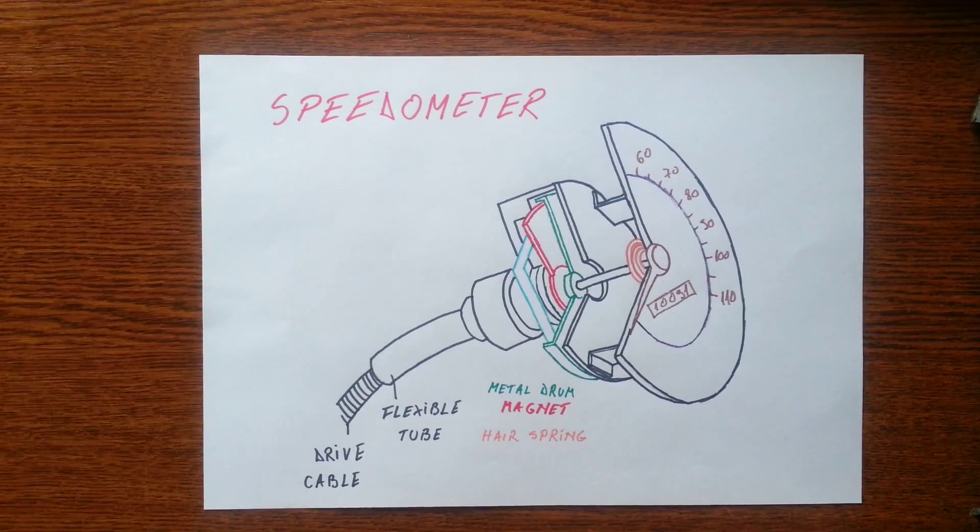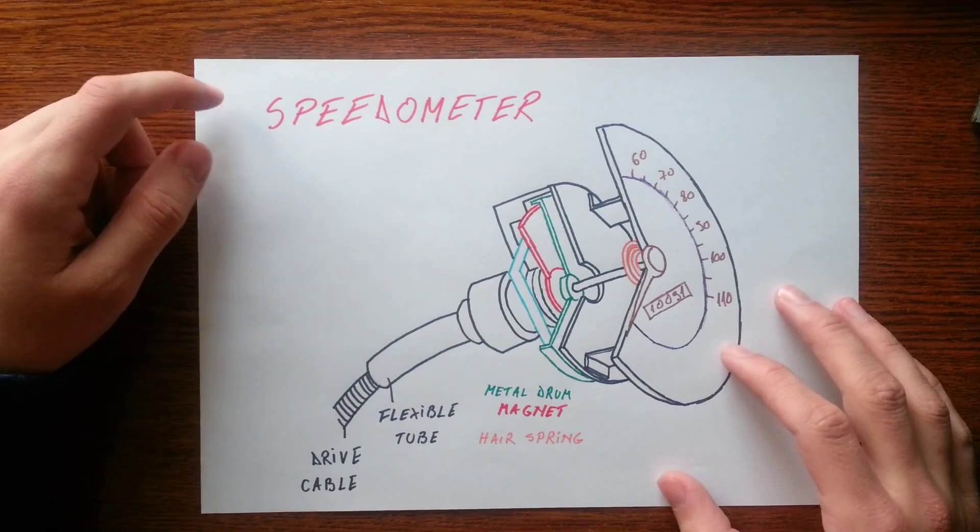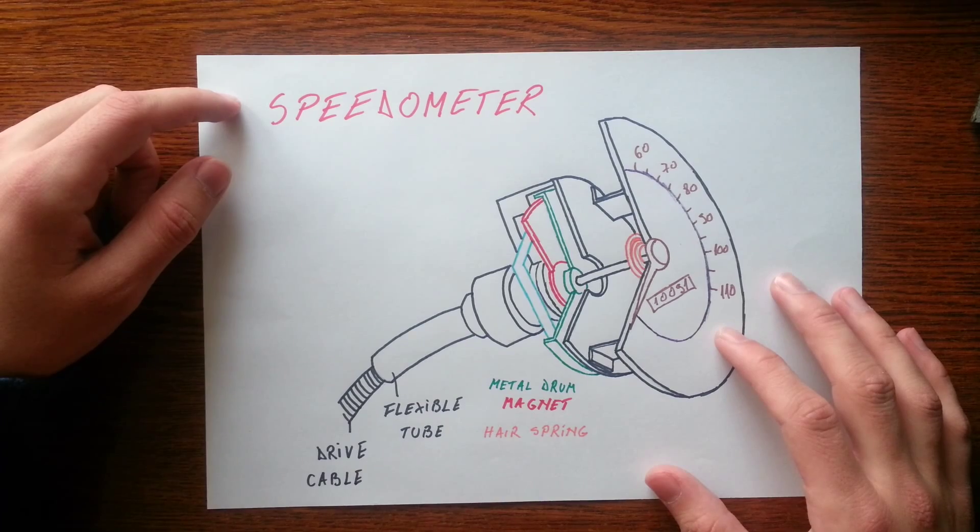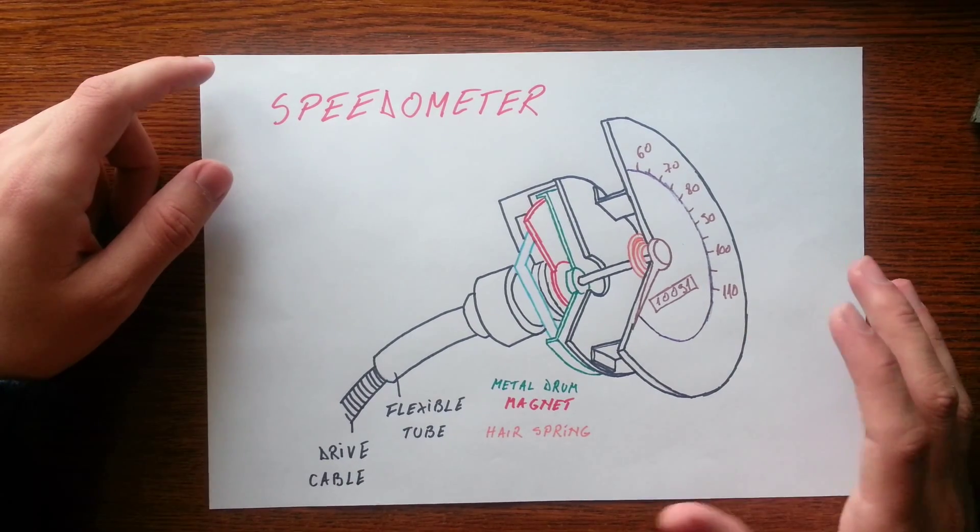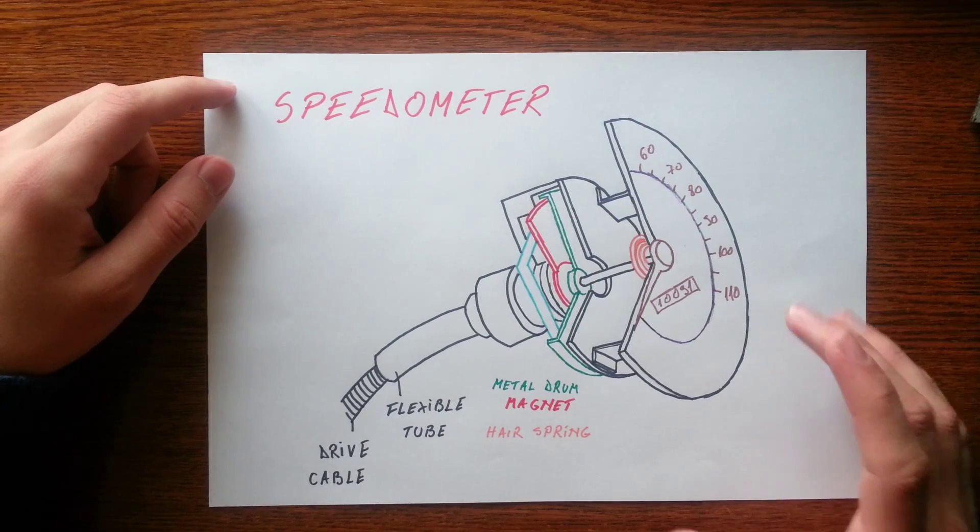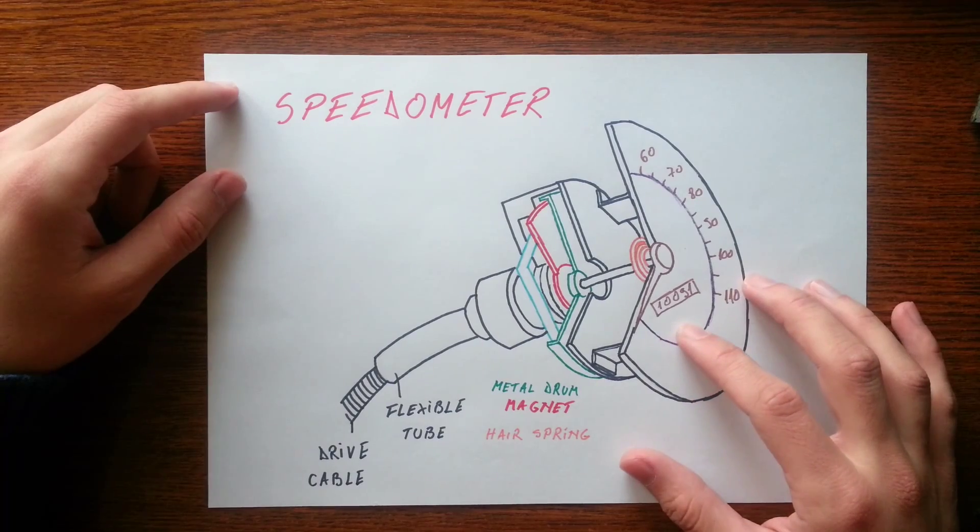Hey guys, so today we're going to talk about the mechanical speedometer. Even though the trend is now towards using electronics in speedometers, most cars, even ones being built today, have a mechanical speedometer, usually with a needle and calibrated dial to show the speed.